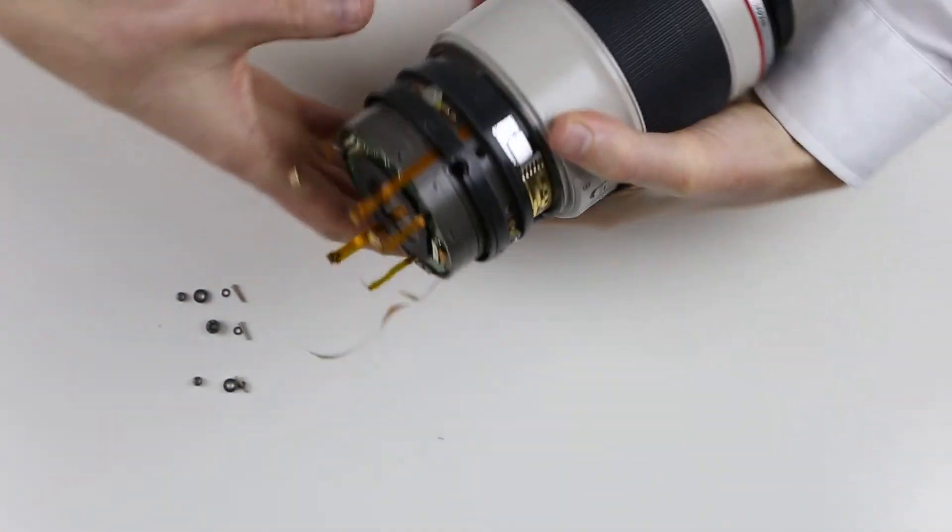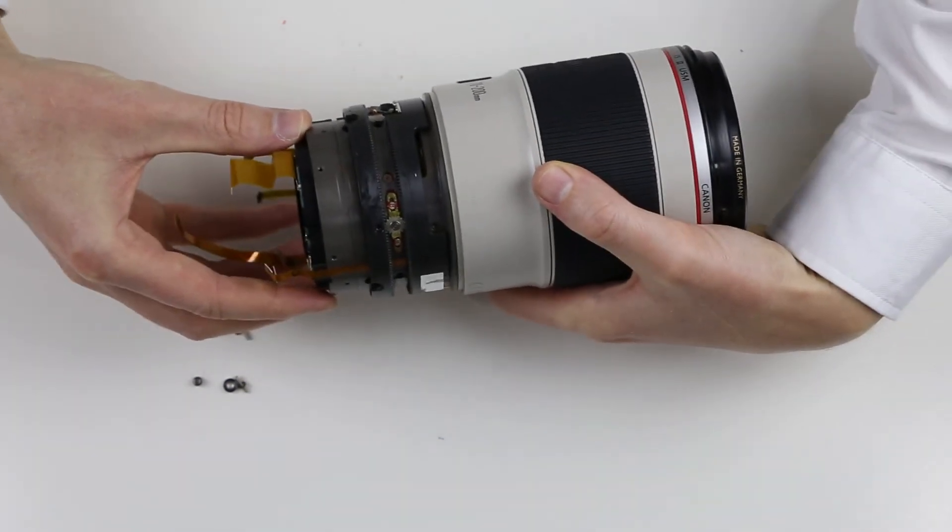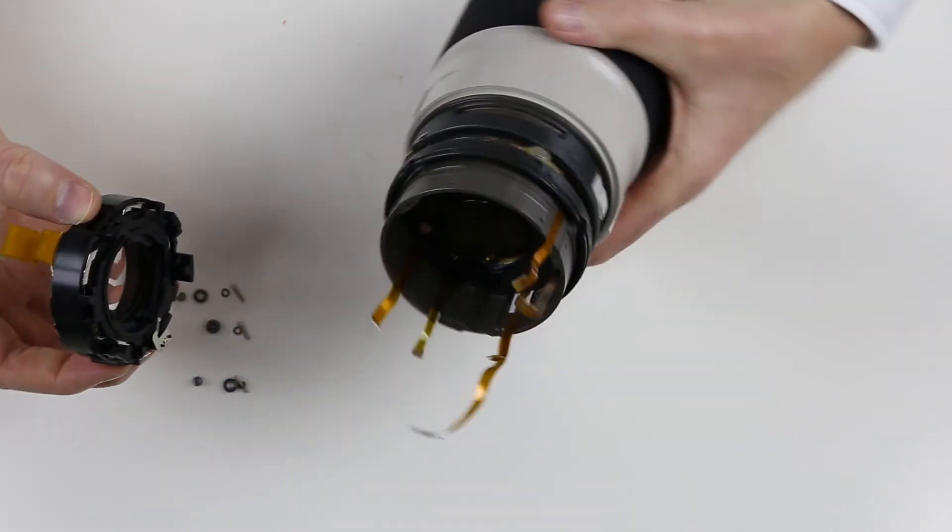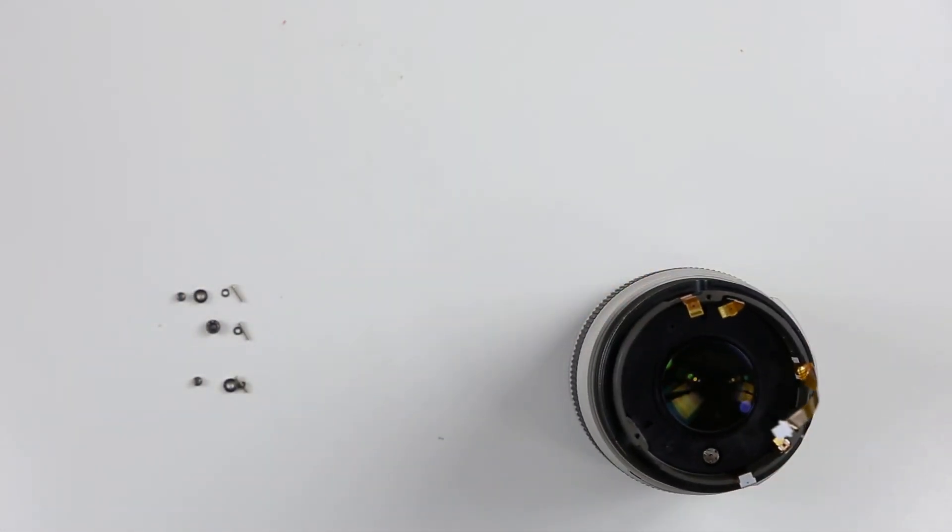When all these screws have been removed, the IS module slides out. And we are done.